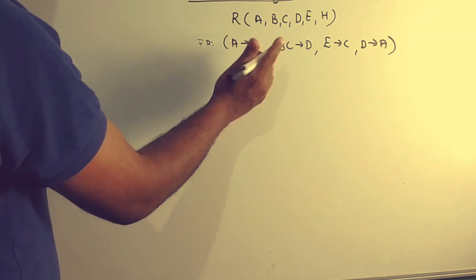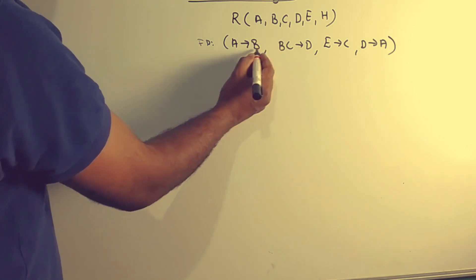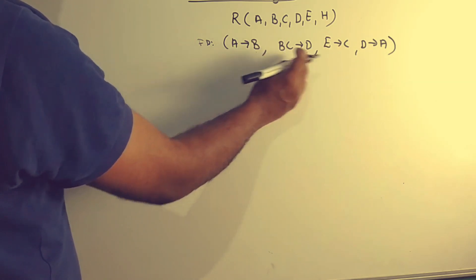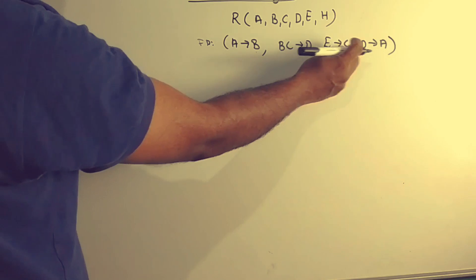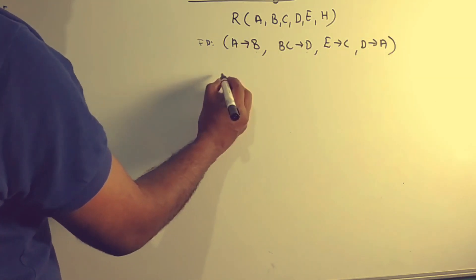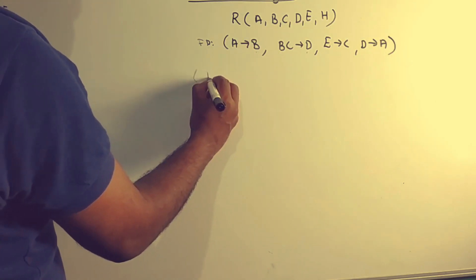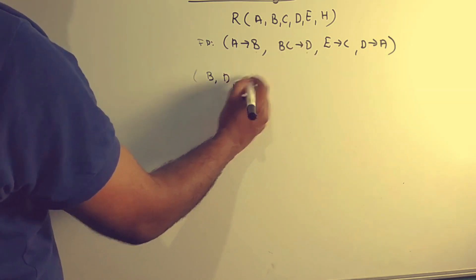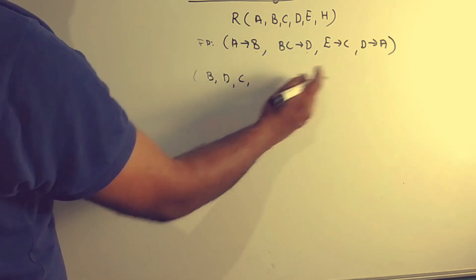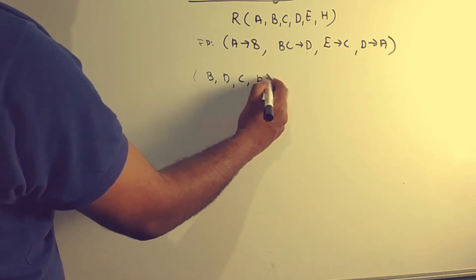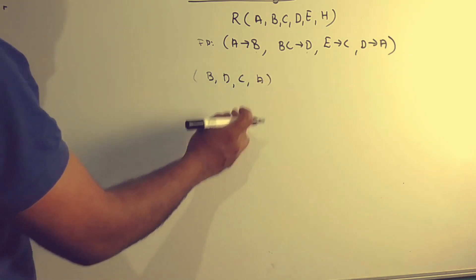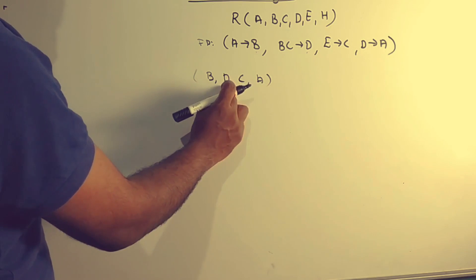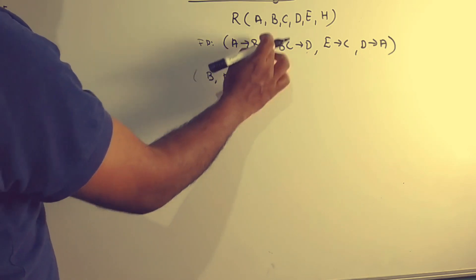We use the functional dependencies to compute closures. The function gives us the closure between attributes A, B, C. The closure of A gives us B, C, A, and then D.